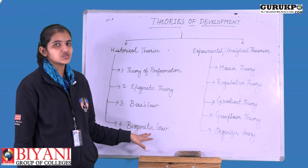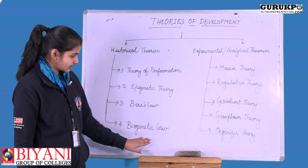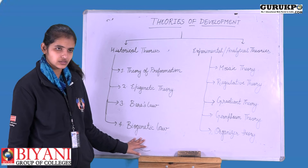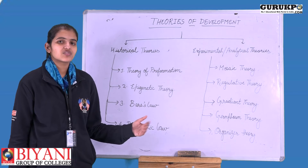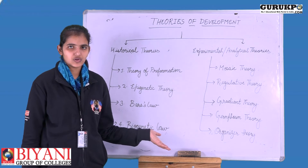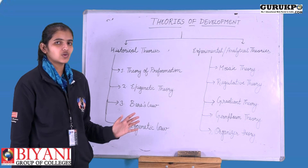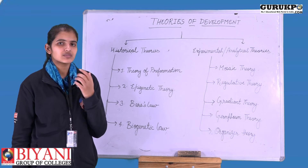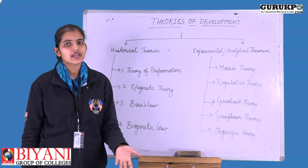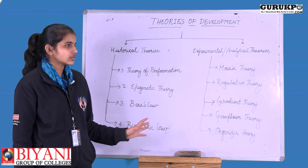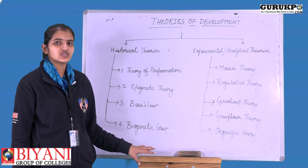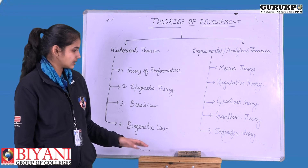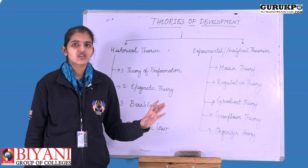The biogenetic law is also classified here because it was based on parallel observations rather than controlled experiments. The biogenetic law states that ontogeny repeats phylogeny — that is, the developmental stages of an organism represent its evolutionary history. Since life started as a single-cell organism, the development of any organism also starts from a single cell, the zygote, retracing evolutionary steps toward that species.